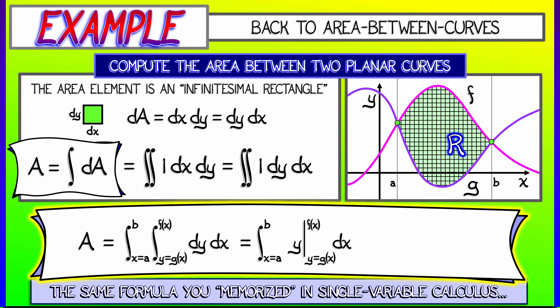Oh, that's right. We get quantity f of x minus g of x. Now we integrate that with respect to x, evaluate as x goes from a to b. And boom, that's it. That is the formula that we all know and love from single variable calculus.